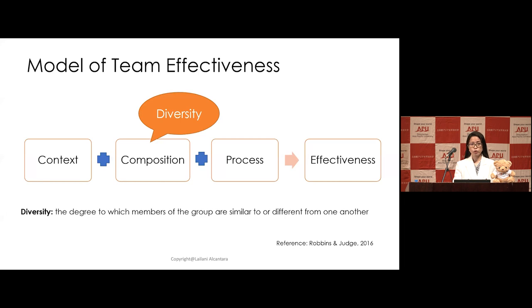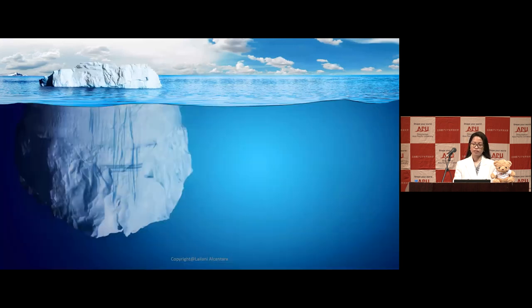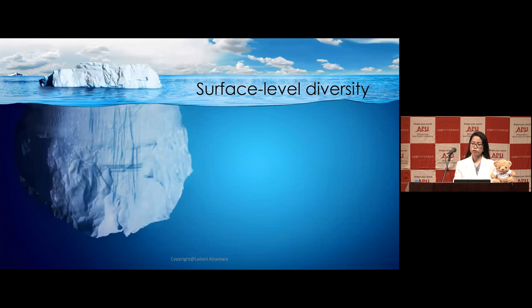To further elaborate on what diversity means, I'd like to use the image of an iceberg. Many of us only see the tip of the iceberg, but underneath we don't know how huge it is — and it's the same with diversity. Diversity can be categorized in two ways. First is surface-level diversity, which refers to dimensions of diversity we can easily observe just by looking at team members. This includes factors such as gender, race, and nationality.